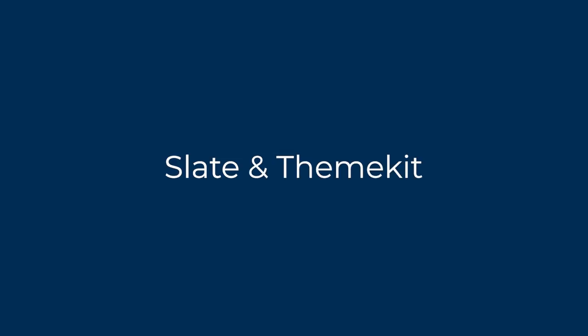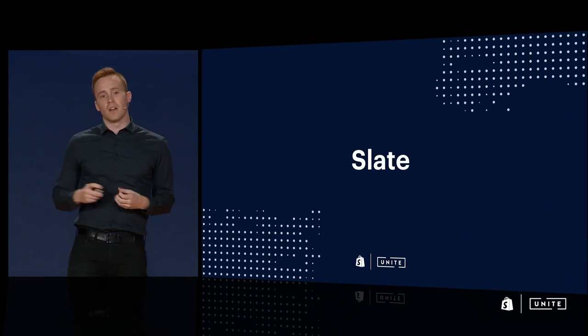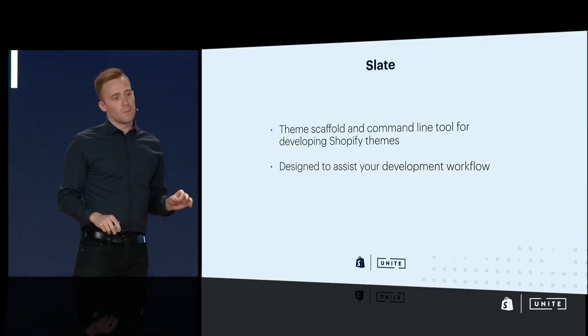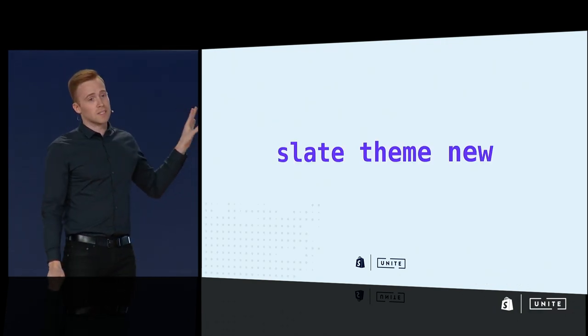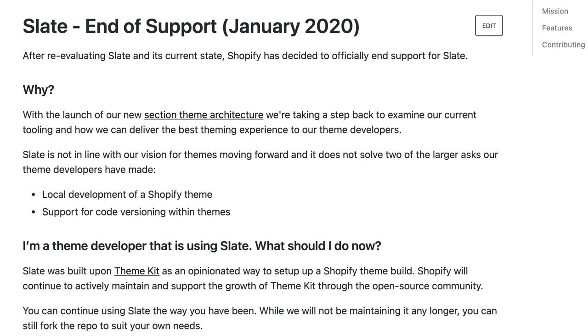Before we get started, I want to provide some context about where this tool fits in compared to previous tools for developing Shopify themes. When I first started Shopify theme development back in 2019, there were two tools available: Slate and ThemeKit. At Shopify Unite 2017, Shopify announced Slate, a new build tool for Shopify themes intended to provide a more developer-friendly scaffold. Slate did have some good points, such as the ability to split up SCSS into multiple modular files and update CSS changes locally, but Shopify decided not to maintain the project and announced they were officially ending support for Slate in January 2020.